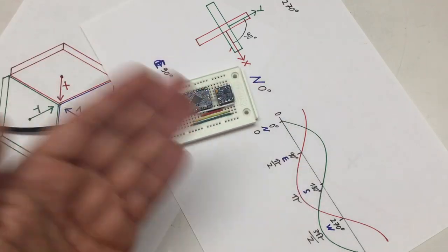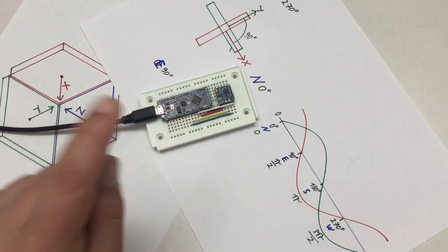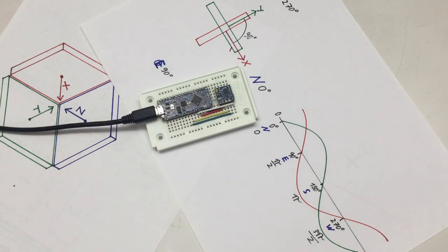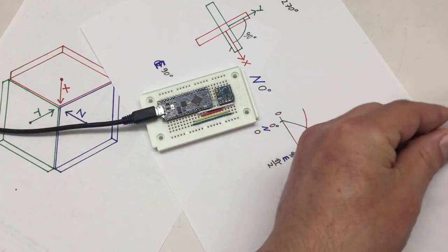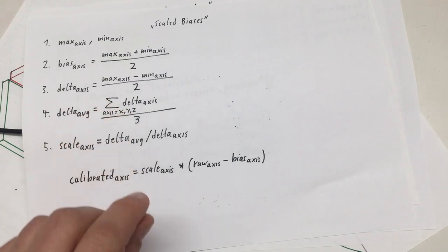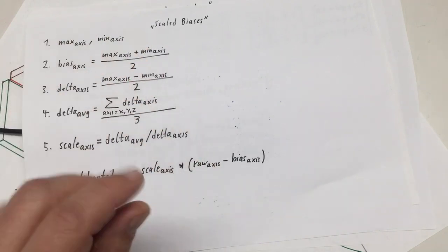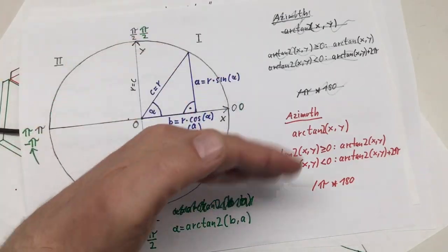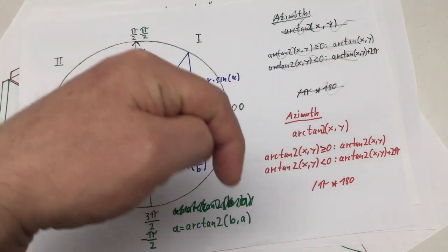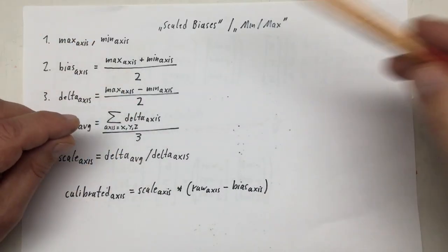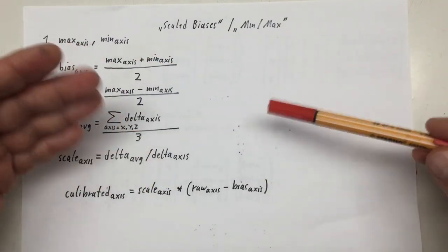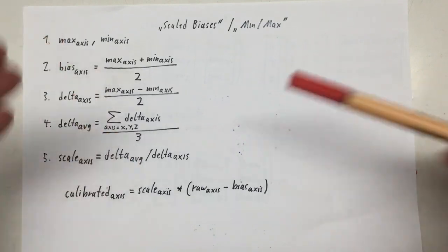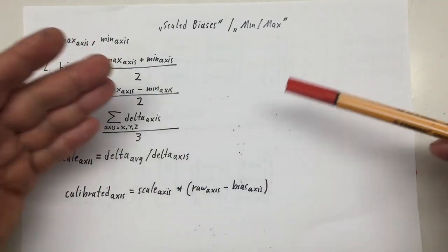Welcome back to the fourth video about the details of digital compasses, specifically the QMC 5883L. In the last video we talked about the need for calibration and the theory of calibration. I showed you two calibration methods and we implemented the simpler one. The results were underwhelming, but we continued by calculating a compass direction from the sensor data.